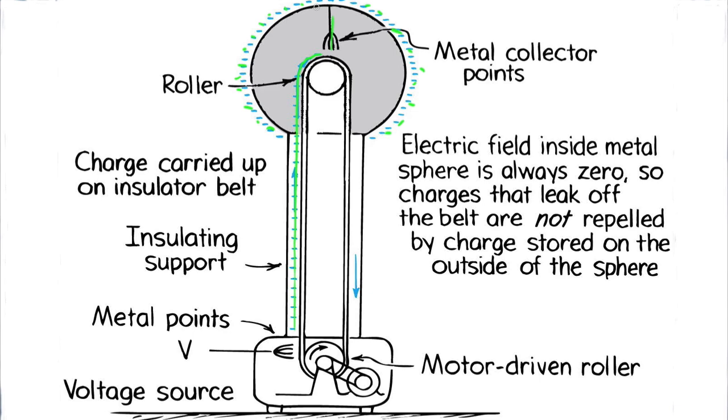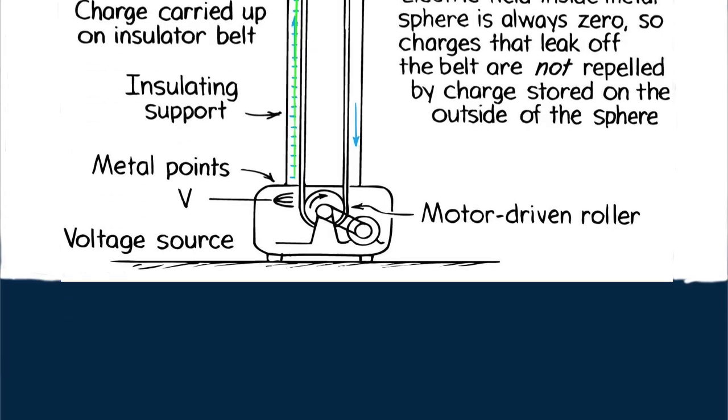No matter how much net charge accumulates on the outside of the dome, field strength inside is zero. That means charge can be added if introduced inside the dome without repelling away, whereas any charge that approaches the outside of the charged dome is repelled away. Inside, not the case. The result is that charge can keep building up on the dome's outer surface, until the buildup voltages produce electric discharge through the air. Then we have localized lightning bolts.